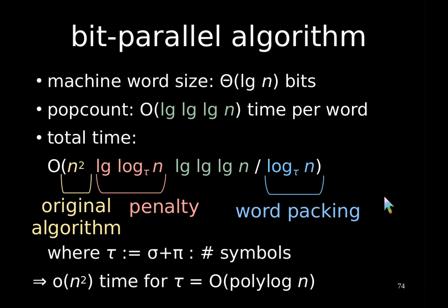Now you might wonder whether we can go below quadratic time. The question is whether you can give an algorithm that computes Repair within the space bounds but in asymptotically less than n squared time. And if you allow us to change our model of computation we can give you such an algorithm which works in bit-parallel. We use a machine word size of theta log n bits and popcount which takes order log log log n time per word. And then we get the following total time. Namely we have the time consisting of our original algorithm, then a kind of penalty, then the time for the popcount divided by log tau n for the word packing. Where tau is the sum of sigma plus pi meaning the number of all symbols that can appear at any time.